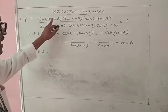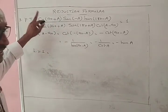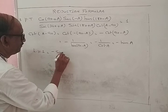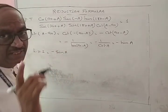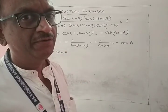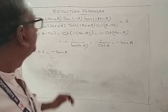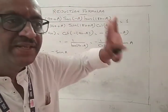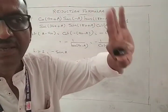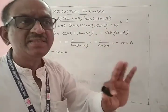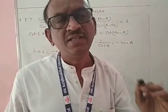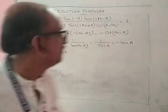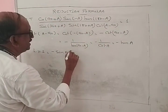cos(90 + A) = minus sin A (standard result). Since cos(minus θ) = cos θ, and sec is the reciprocal of cos, sec(minus θ) = sec θ. Therefore sec(minus A) = sec A.